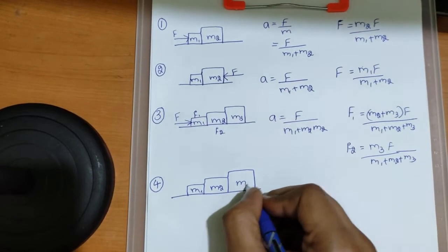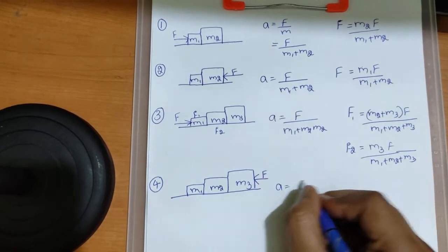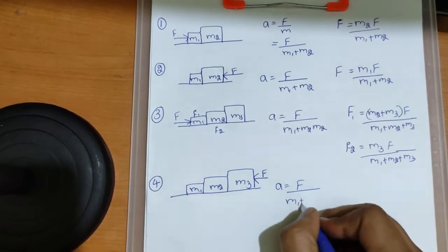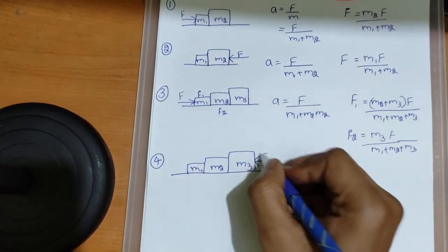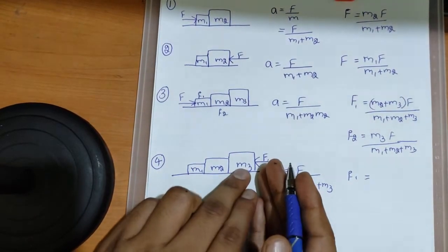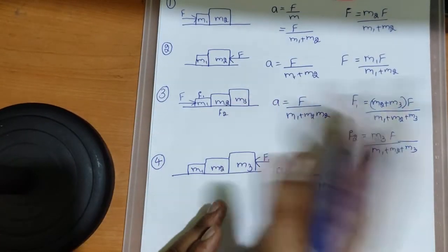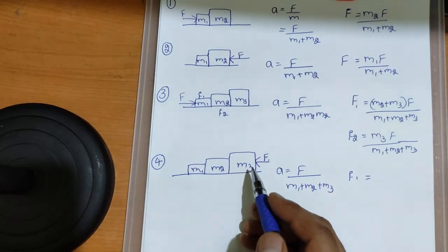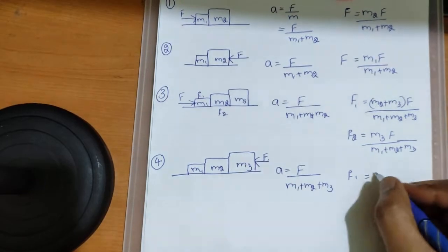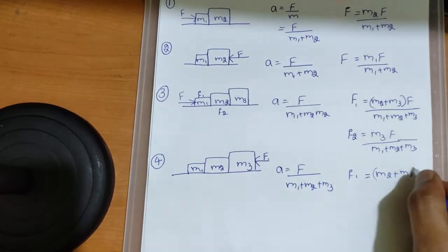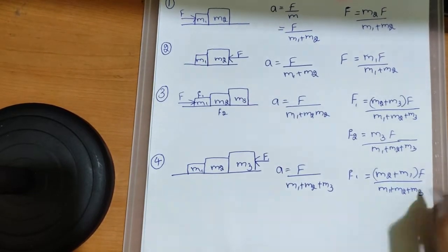Now I'll reverse the situation: m1, m2, m3, applying force from the right side. Acceleration is the same: F by m1 plus m2 plus m3. Now this contact force — if you want to calculate it, forget m3, leave it, don't consider m3. Whichever block the force is being applied on, you forget that block; the remaining blocks you write, divided by the sum of the masses.